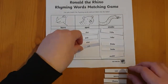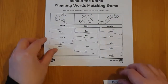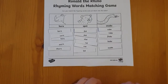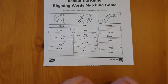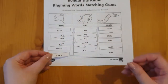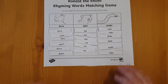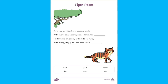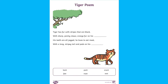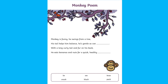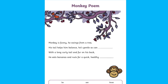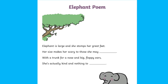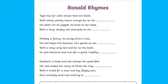You could note the spellings of words that rhyme — for example, 'dawn' does not use the same letters as the other words which rhyme with 'horn'. You could then try this Ronald Rhymes poem activity sheet to see if your child could complete the poems by placing the missing rhyming words in the spaces.